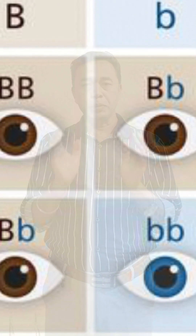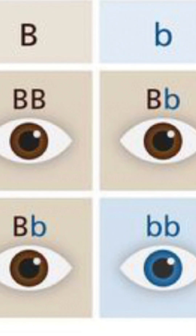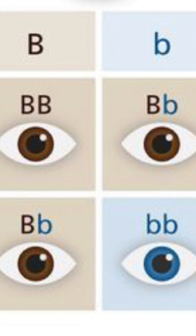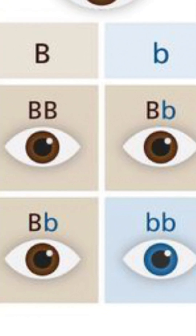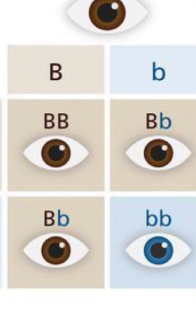For example, the dominant trait or character is the brown eye color, represented by capital B, and the recessive character is the blue eye color, represented by small b.